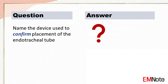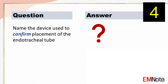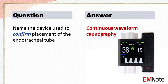Name the device used to confirm placement of the endotracheal tube. The device used to confirm placement of the endotracheal tube is continuous waveform capnography.